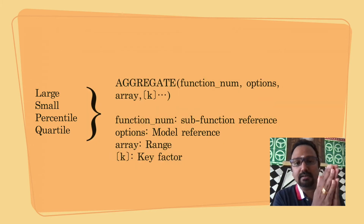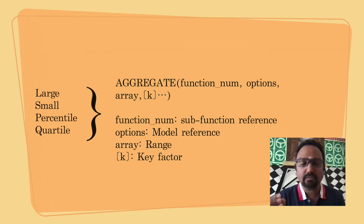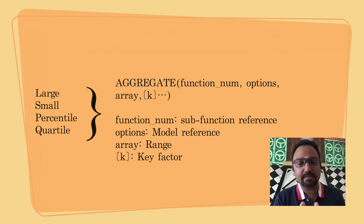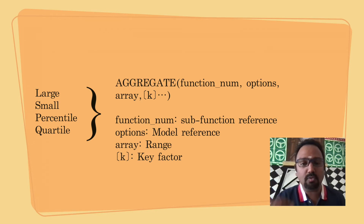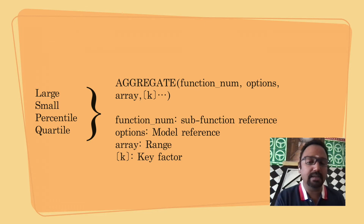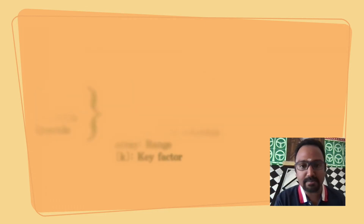Apart from selecting the function and the model of working, then the range and the array selection — that is the critical factor. So that is the importance of the 14th to 19th formula. That is how the syntax works.